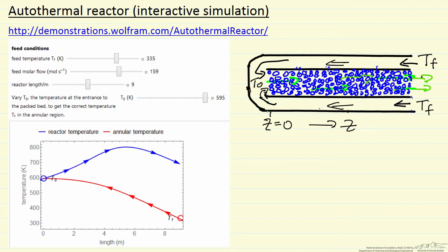Here I'm going to concentrate on the interactive simulation. On the right, I'm showing a representation of this reactor. It's a tubular reactor. The center blue circles represent catalysts, and the annular region around the catalyst region is where the gas is fed.